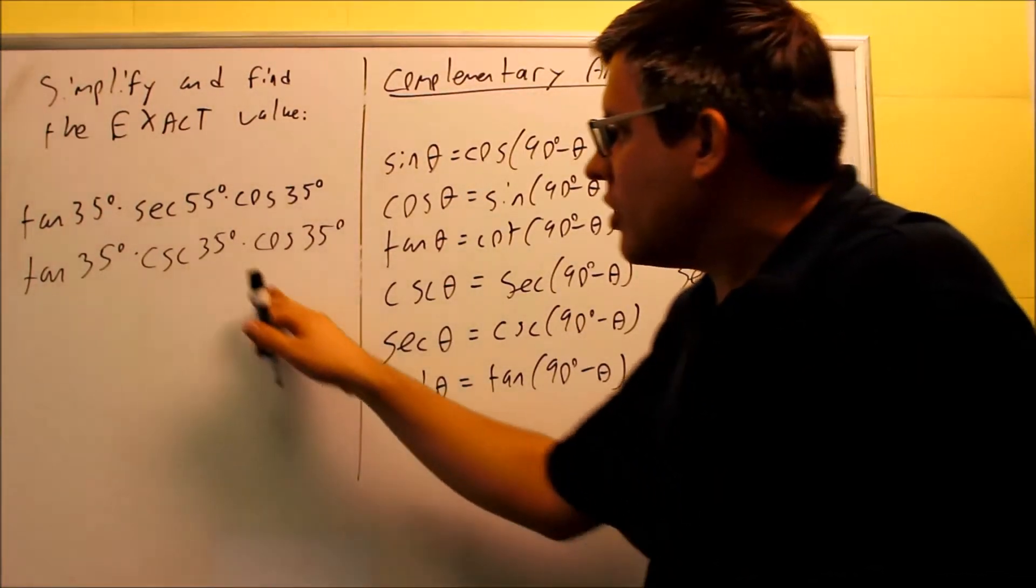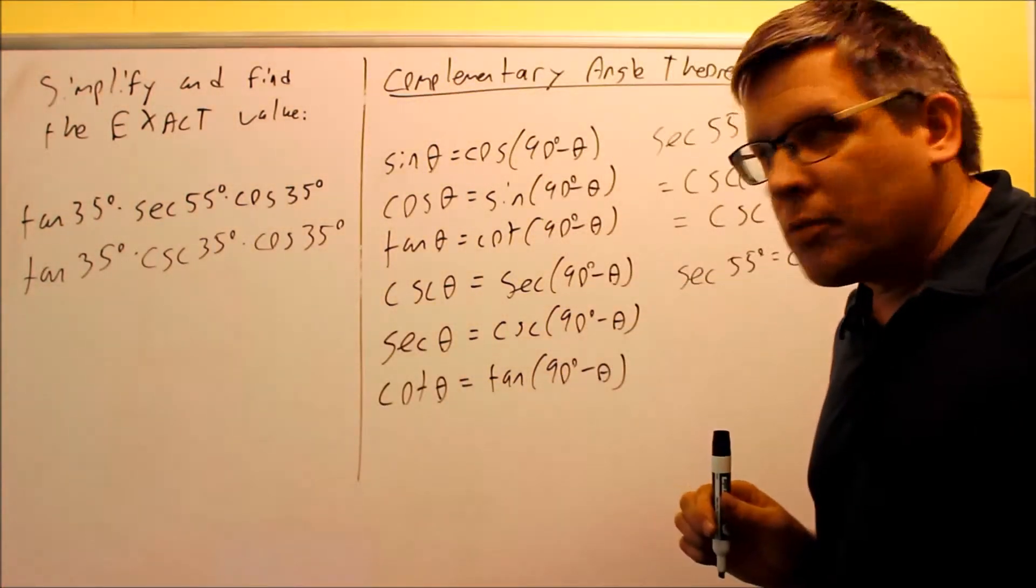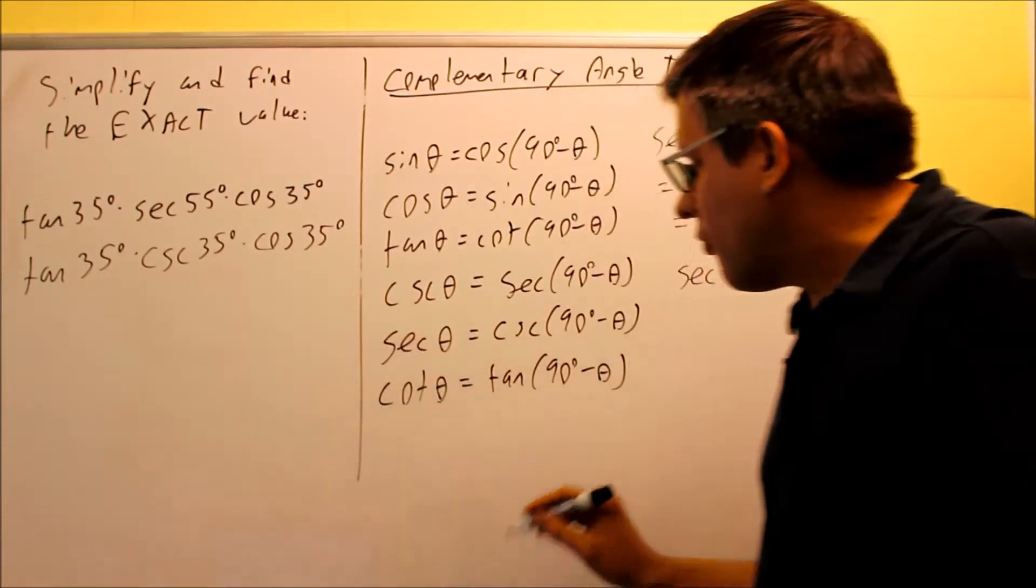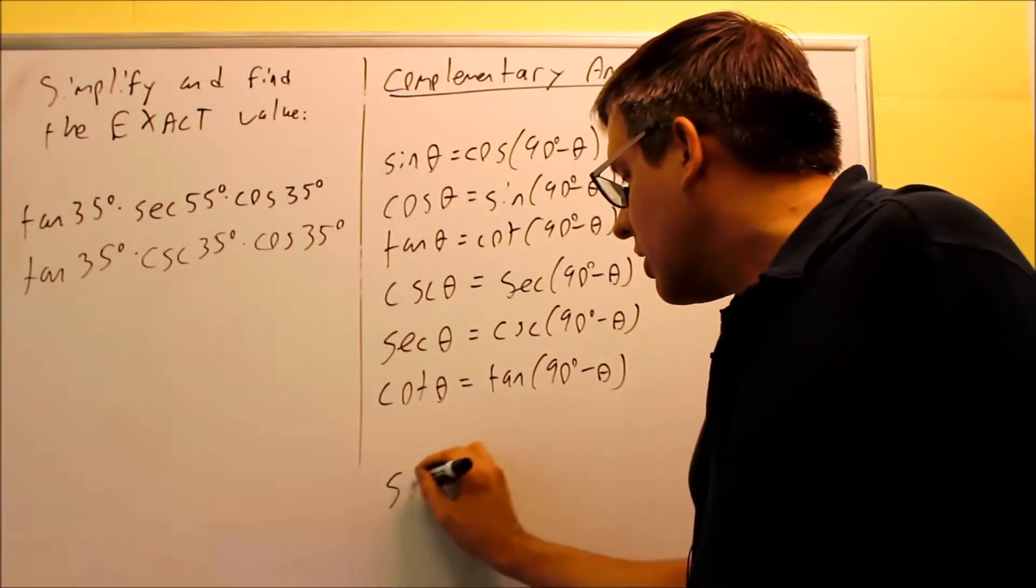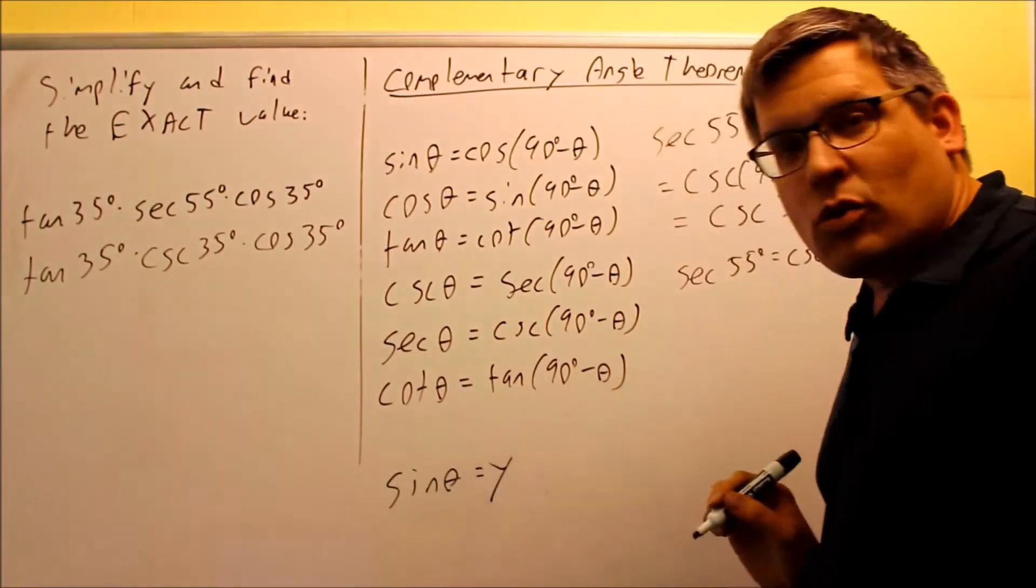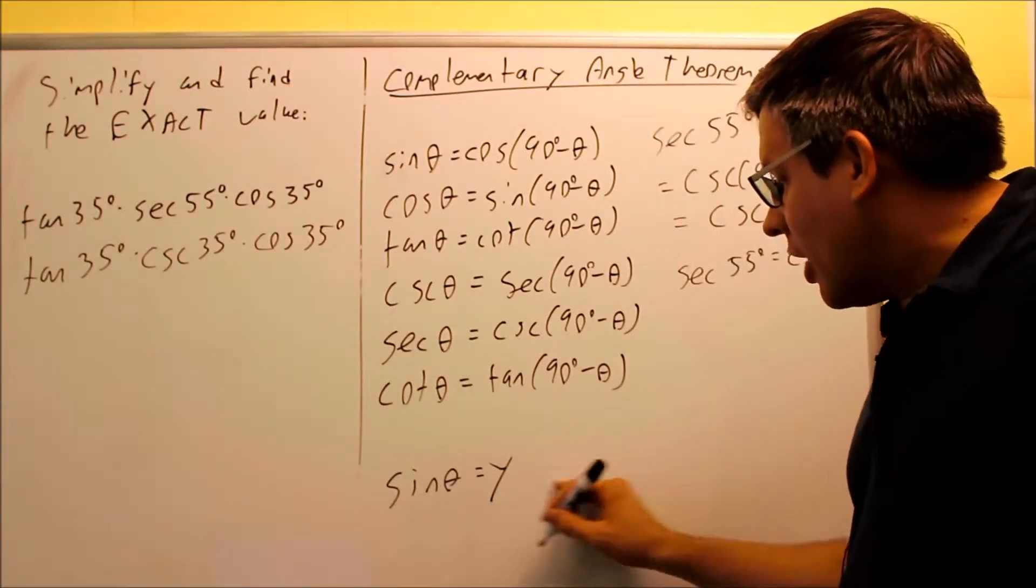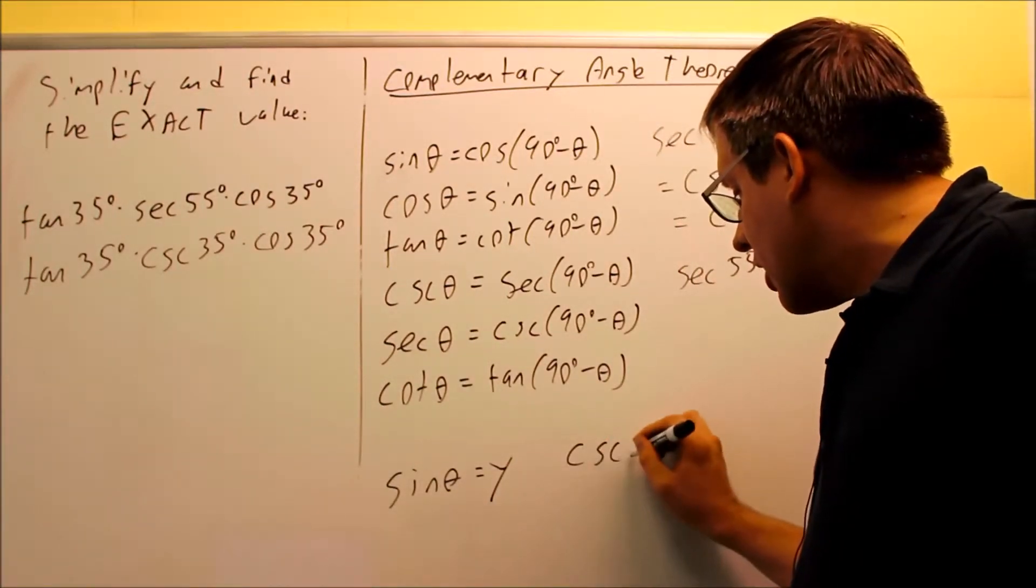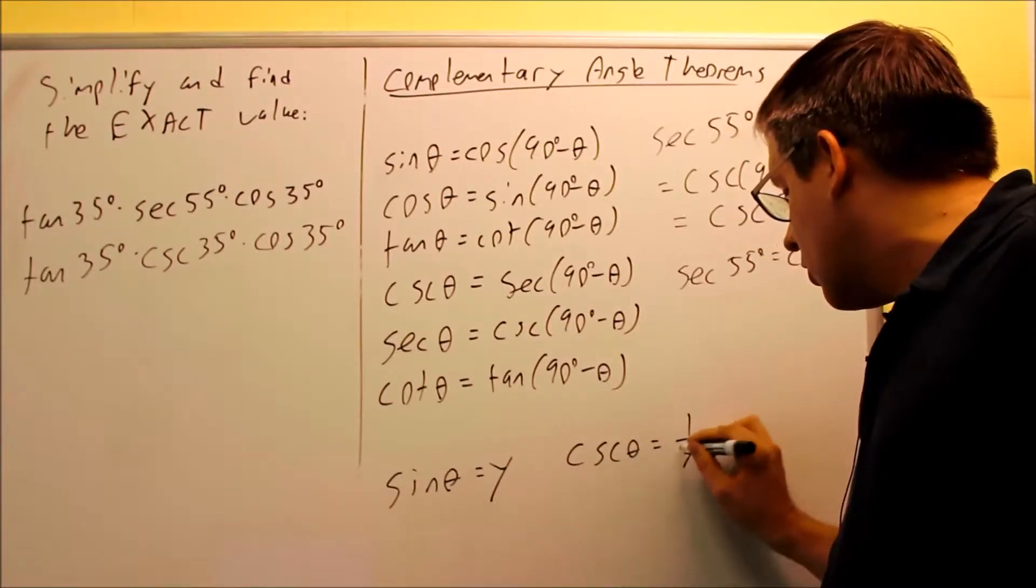Next, what I need to do is I need to simplify this down more. So we talked about before in the past that your sine theta was equal to y. I also know that my cosecant theta is equal to 1 over y.